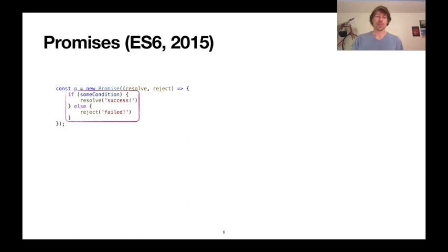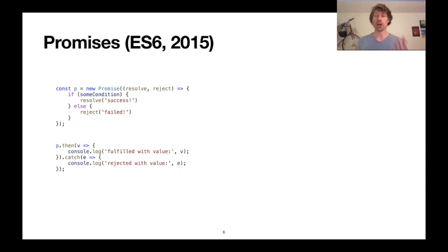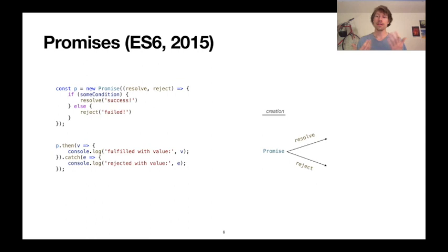Reactions are registered on promises using .then. In this example, we register a reaction on p so that if p is resolved, whatever it is resolved with, we log it to console — so if p was resolved, this would print 'fulfilled with value success'. We can also register a catch reaction to handle errors. To inject some terminology: promises start in a pending state, then transition to a settled state when resolve or reject is called, at which point we can register reactions and do error handling.